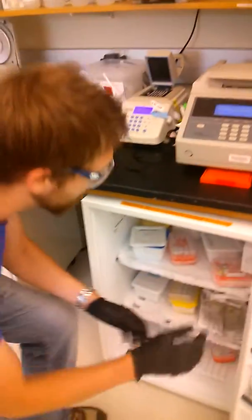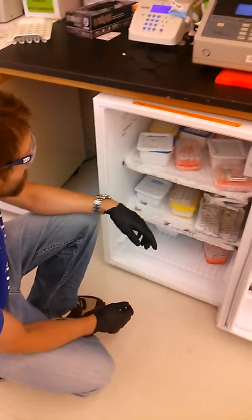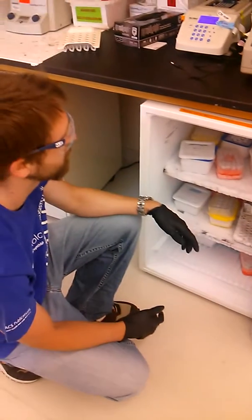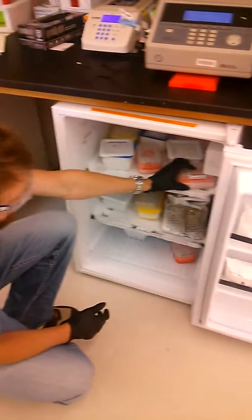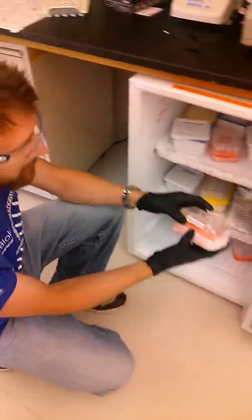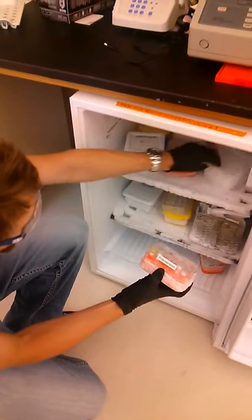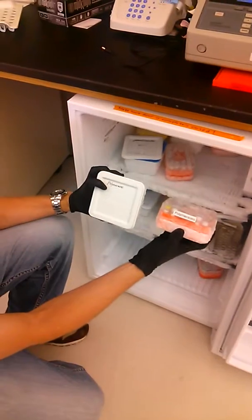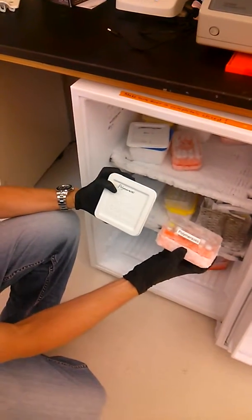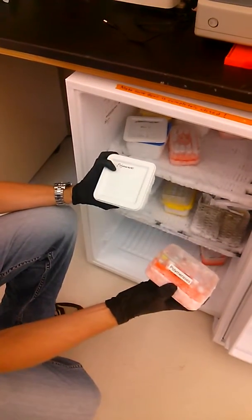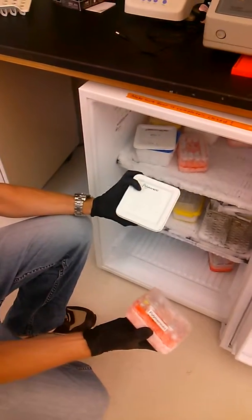Also in this freezer we have supplies for doing restriction enzyme digests for ligations, for cloning. But also we have our polymerases, which are the enzymes that we need to use to run our reaction. So there's actually a couple of different boxes labeled polymerase. And you might use different polymerases depending on what type of PCR you're running.